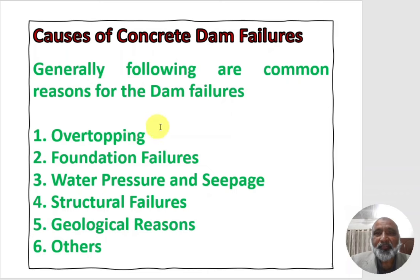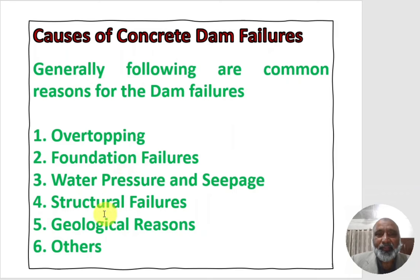Generally, the following are common reasons for dam failures: overtopping, foundation failures, water pressure and seepage, structural failures, geological reasons, and others. These causes are interrelated. If there is water pressure or seepage, it will affect the foundations and cause foundation failure or structural failures. If there is poor geology, it will also affect foundation failures and lead towards structural and other failures.